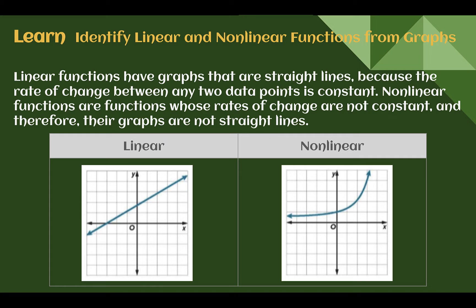Identify linear and non-linear functions from graphs. So far, we've only seen linear functions. Linear functions have graphs that are straight lines — linear has the word 'line' in it. They are straight lines because the rates of change between any two points on a line is constant, and we showed this using our slope triangles back in Module 4. We can show that it's constant slope no matter where we are on the line.